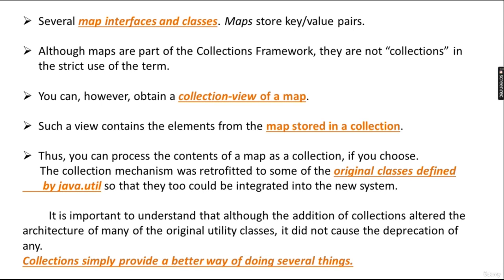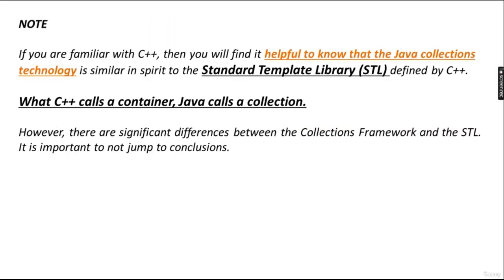The collection mechanism was retrofitted to some of the original classes defined by java.util so that they too could be integrated into the new system. It is important to understand that although the addition of the collection altered the architecture of many original utility classes, it did not cause the deprecation of any. Collections simply provide a better way of handling groups of objects. If you are familiar with C++, Java's collection technology is similar to the Standard Template Library (STL); what C++ calls a container, Java calls a collection, though there are significant differences between them.